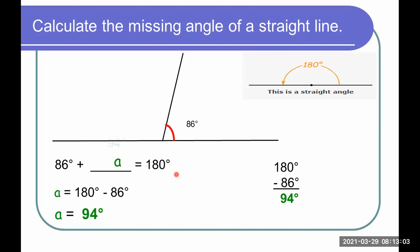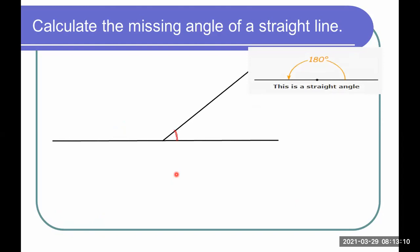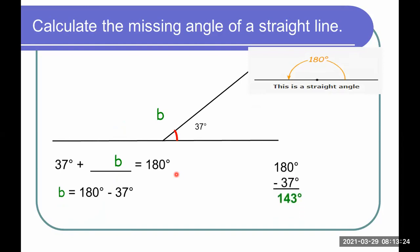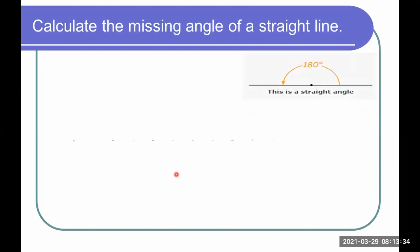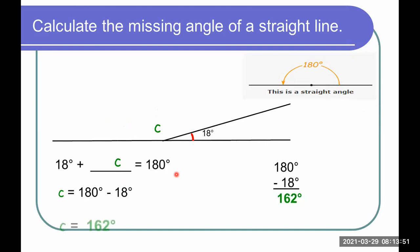Now let's try another one. What if the given angle is 37 degrees and we need to find B? We subtract 37 from 180, and we get 143 degrees — so angle B is 143 degrees. Now it's your turn: if the angle is 18 degrees, what is the measure of angle C? 180 minus 18 is 162 degrees.